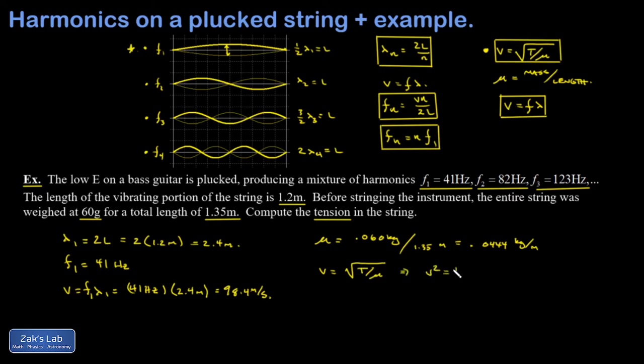Now I manipulate this equation to solve for T. I get V squared equals T over mu. Which means T is mu V squared. Now I can plug in and find my tension. And this comes out to 430 newtons.